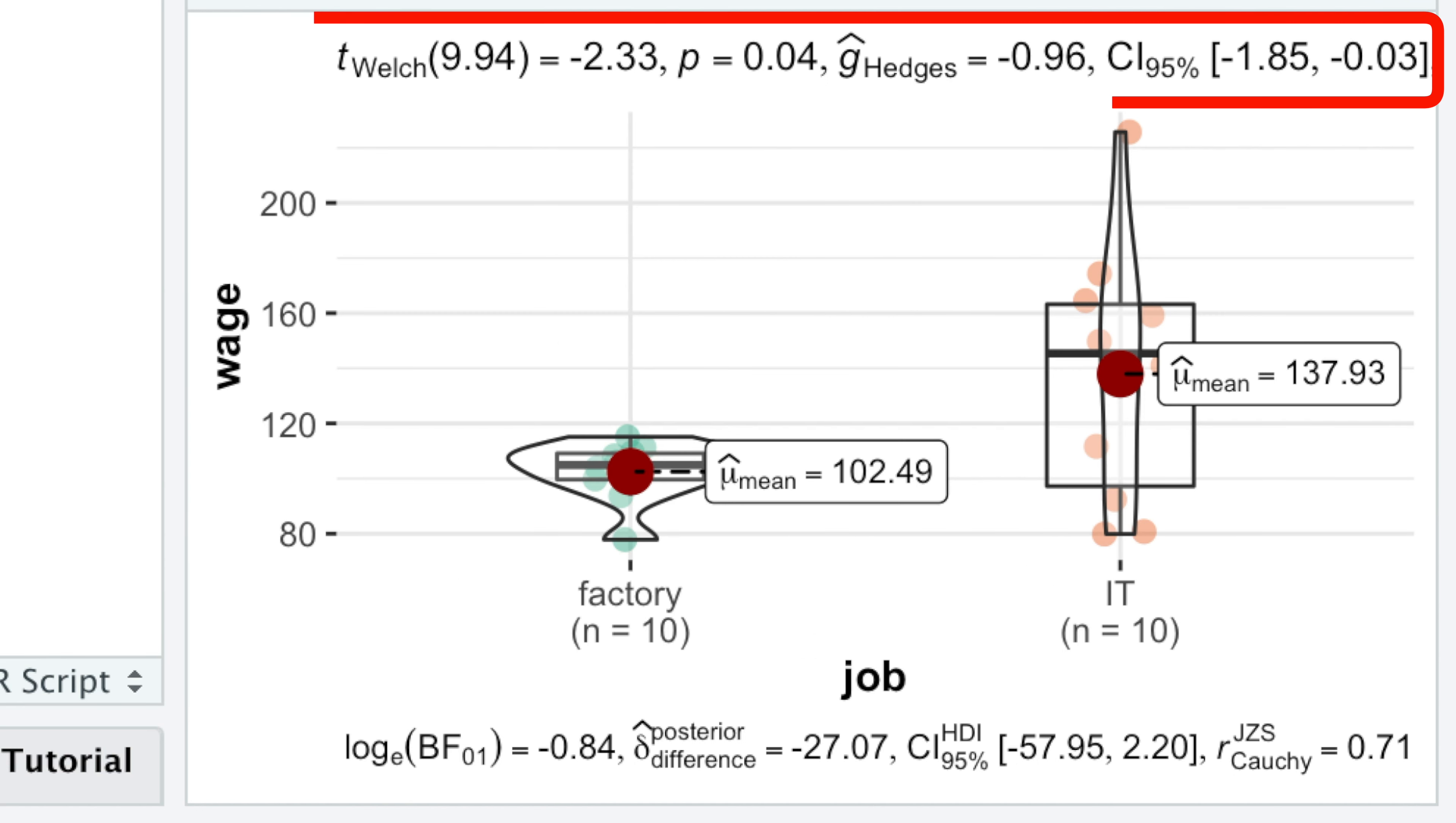But how can it be that both the effect size and the difference are large while this difference is hardly significant?